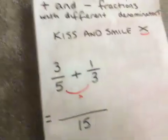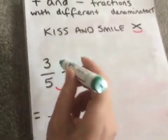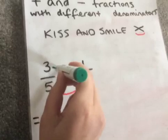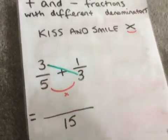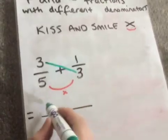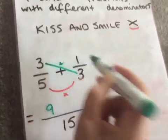Then we're going to start the kiss process. So we take the top number of this numerator and we're going to multiply it by the denominator of the second fraction. And 3 times 3 is going to give us 9, so we're multiplying.